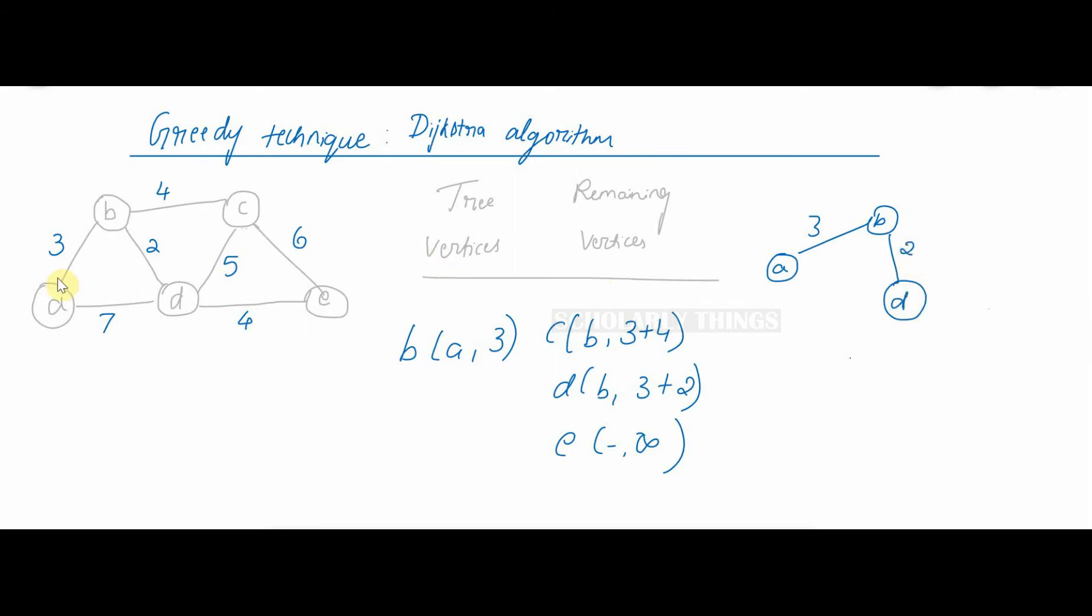With value 2. You can see here there are two ways of reaching to D. One was 3 + 2, the other one was 7. So I need to always find the shortest path. That's why I have considered this route 3 + 2.